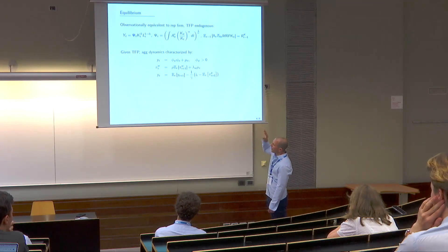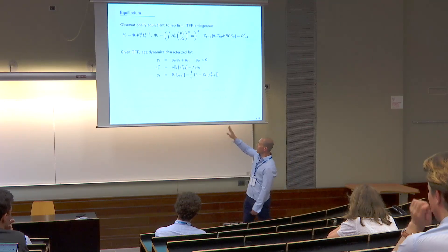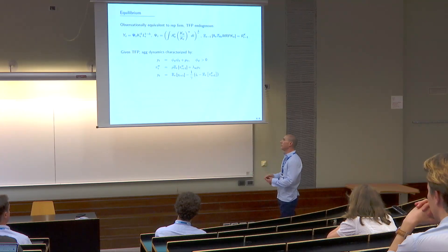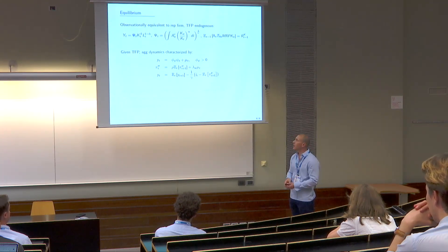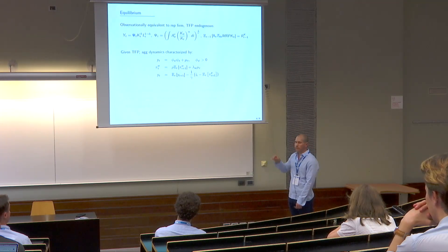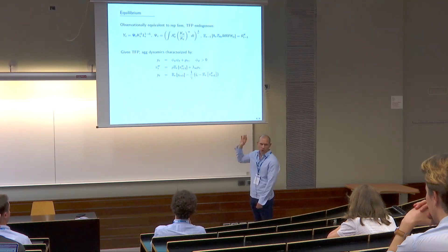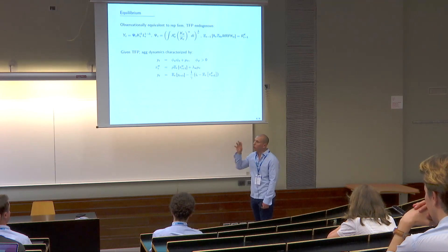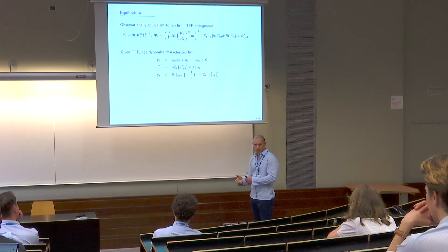The rest of the model looks exactly like a standard three-equation New Keynesian model. Output decomposes into two terms: the natural rate of output determined by TFP, and the output gap coming from sticky wages — that's mu. There's a standard New Keynesian Phillips curve and a standard consumption Euler equation. The only difference from a macro point of view is that TFP is endogenous.